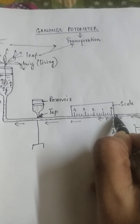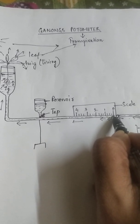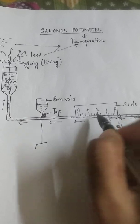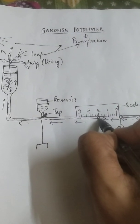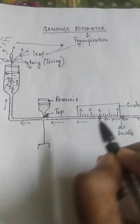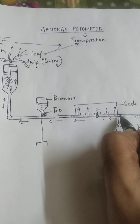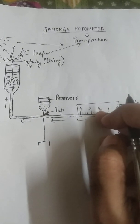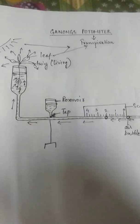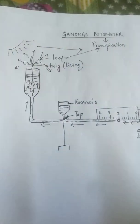So suppose the air bubble is moving forward very very slowly. It has moved till 2. And for moving from this point to this point suppose it has taken say 20 minutes and then I stop the reaction.